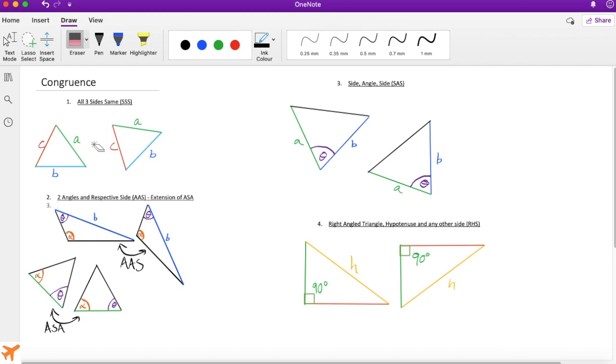Rule one: all sides are the same length. So if we have two triangles ABC and ABC, and length A is the same as this length A, length B is the same as this, and C the same as this, regardless which way up it is, these two triangles are the exact same.